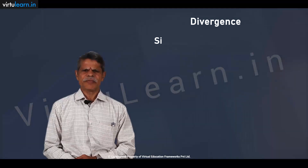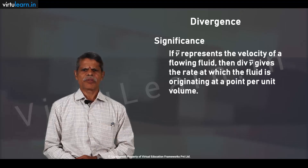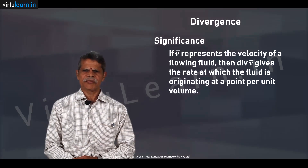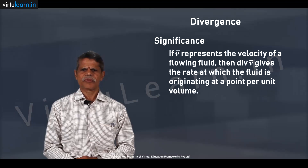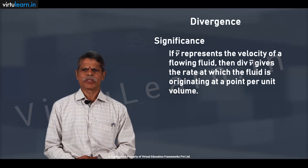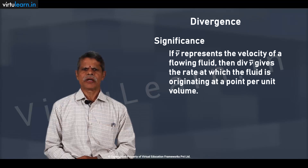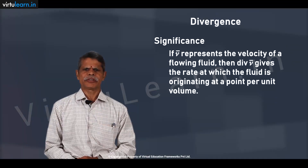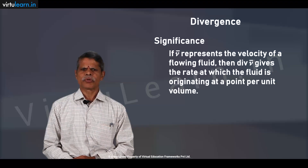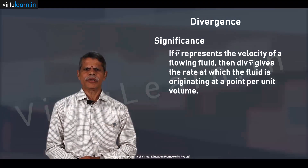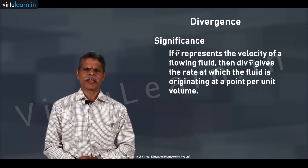What is the significance of divergence? If v-bar represents the velocity of a flowing fluid, then divergence of v-bar gives the rate at which the fluid is originating at a point — that is, the quantity coming out of unit volume in unit time. That is the significance of divergence.